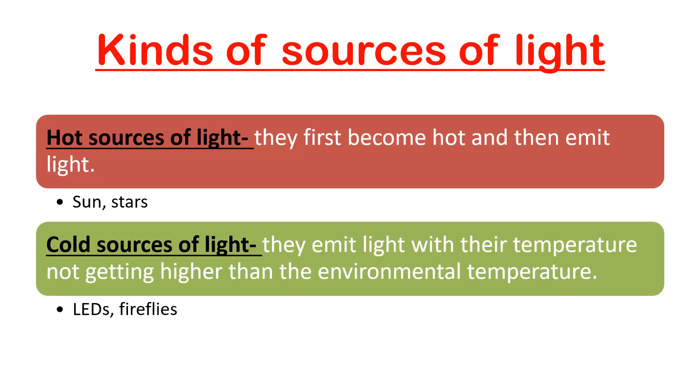Kinds of sources of light. Hot sources of light: they first become hot and then emit light. Example, sun. And the cold sources of light: they emit light with their temperature not getting higher than the environmental temperature. For example, LEDs in your house.